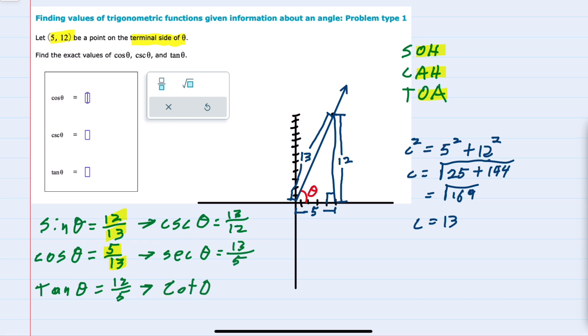And the cotangent of theta is the reciprocal of tangent. So the reciprocal of 12 over 5 is 5 over 12. So we have found all six trigonometric ratios, including those three that were asked for.